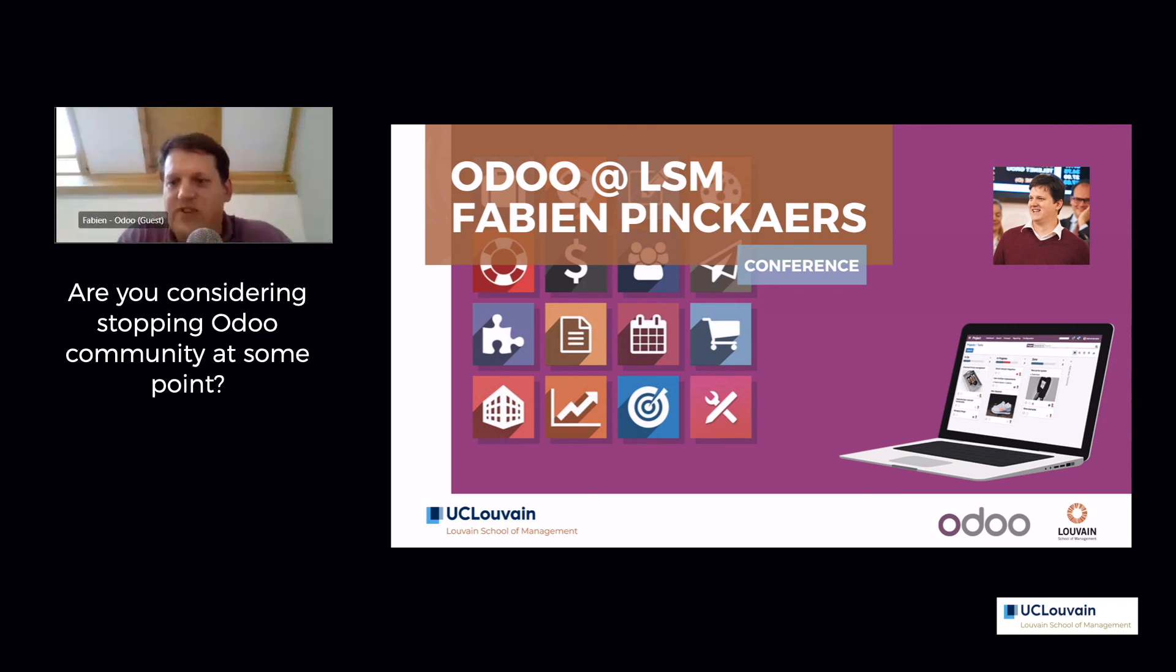Are you considering stopping Odoo Community at some point? No, of course. Why would we stop something that made our success? I mean, it's part of our success to be this open core business model—open source with some extra features. It works very well. It took me 13 years to make it work. I think I've had like eight years close to bankruptcy before that. But now that it works and now that it makes us unique on the market, we would be foolish to stop that. It's actually the opposite. We reinforce that. We still invest 80% of everything in the open source version of the product.